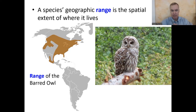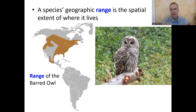For example, this is the range of the barred owl. That brown area on the map is where you can find the barred owl within North America. It doesn't mean every single brown spot has a barred owl — it just means that's the limits of the territory, the range where you can find it.